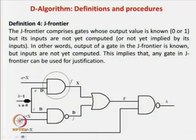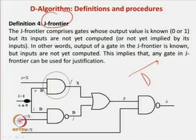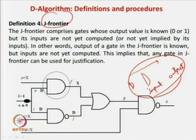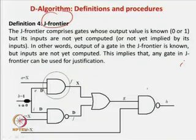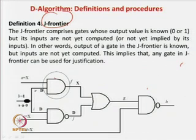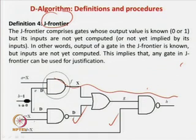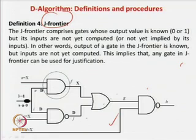Definition 4 is the J frontier. There are two frontiers used in the D algorithm: the D frontier and the J frontier. The D frontier is related to propagating the fault effect (D or D prime) from input toward the output — this is propagation. The J frontier is related to justification and works backward, from output toward primary inputs. The J frontier comprises gates whose output value is known (either 0 or 1), but whose inputs are not yet computed or implied.